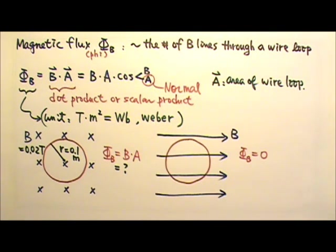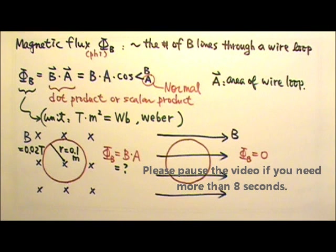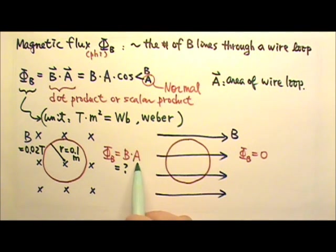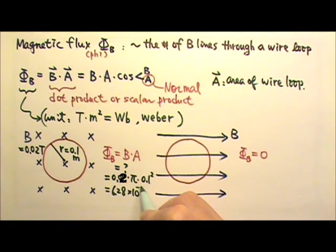For example, let's say this wire loop is circular with a radius 0.1 meter, and the magnetic field is 0.02 teslas. Find the magnetic flux through this wire loop. It is just B times A, so it is the magnetic field 0.02 times the area of the circle pi r squared. So we get 6.28 times 10 to the negative 4th, and the unit will be Webers.